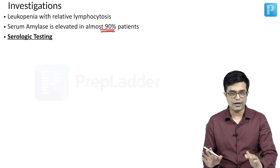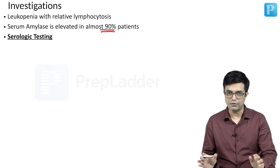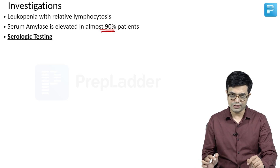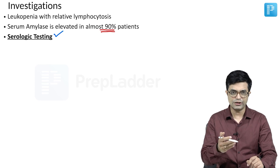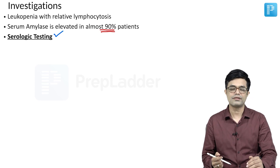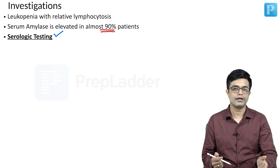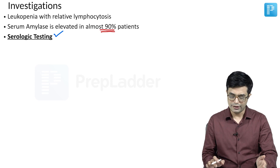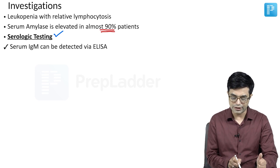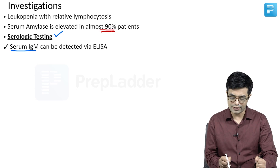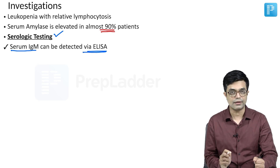Serological testing and viral isolation can be performed. Serological testing is easy to do and this is the mainstay of diagnosis where there is some degree of clinical dilemma. The investigation of choice in serology is serum IgM against mumps virus. It can be detected via ELISA.